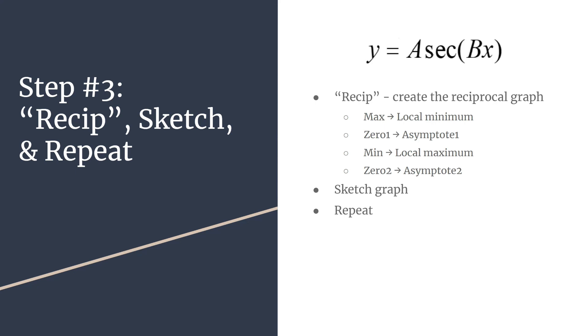And you see here, the maximum will become a local minimum. The zero will become an asymptote. We kind of talked about that when we talked about finding asymptotes. The minimum of your companion equation will become a local maximum. And then the other zero will also become an asymptote. So we'll look at that in a little bit more detail in just a moment. And then we will sketch the graph and then we'll repeat it for as many cycles as we need.